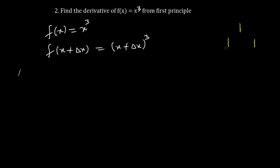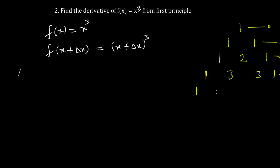For the power of 3 we get 1 3 3 1, where 1+2=3, 2+1=3, with 1 at each end. For the power of 4, the row is 1 4 6 4 1. The triangle continues in this pattern. We will use the row for the third power — 1 3 3 1 — to expand our brackets.